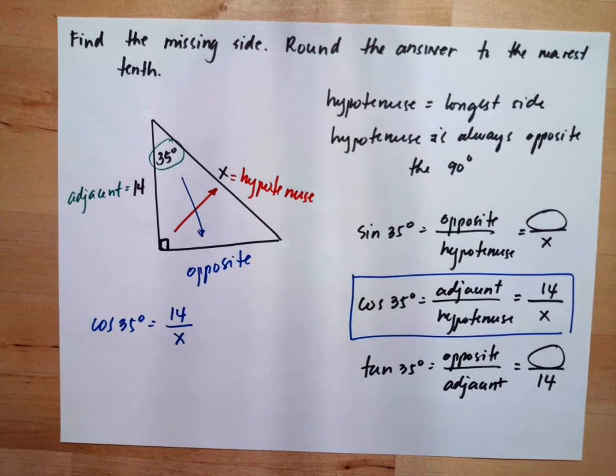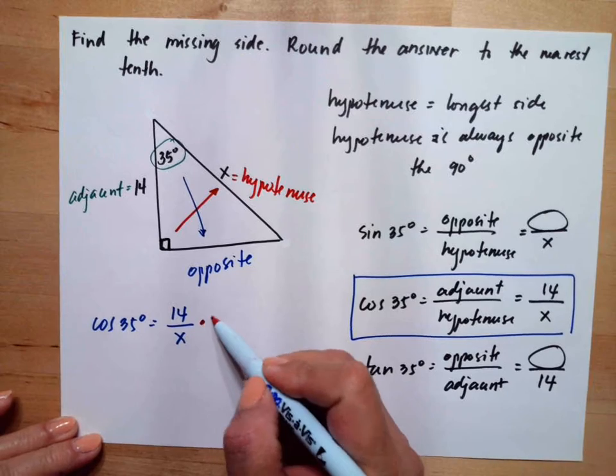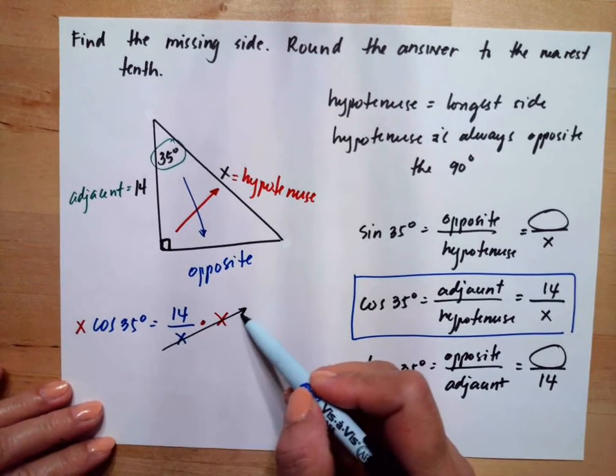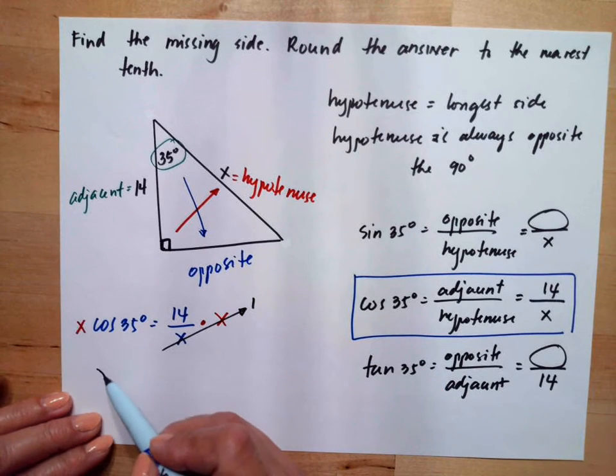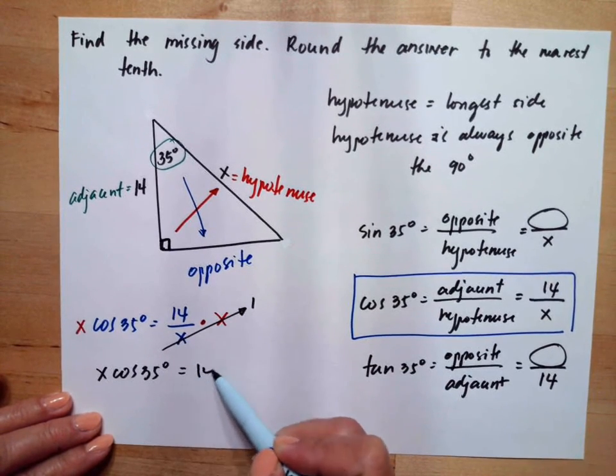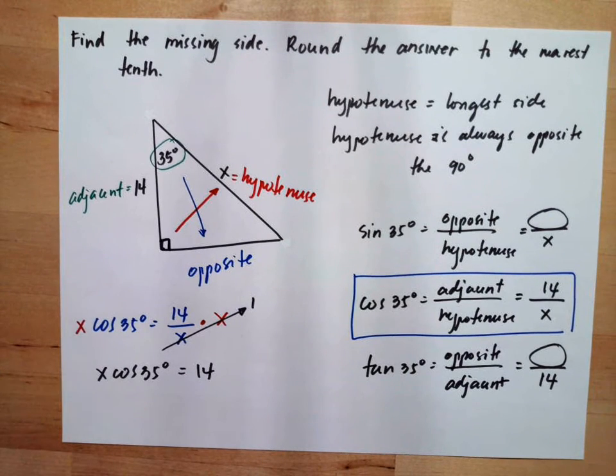Then we will cross multiply both sides by x. So x over x equals 1. So we have x cosine 35 degrees equals 14. And we want to solve for x.